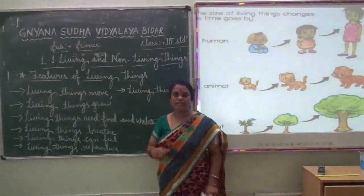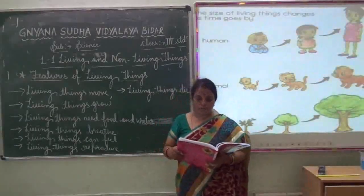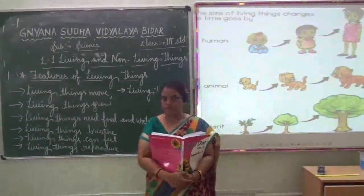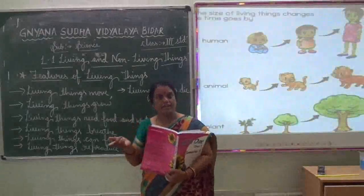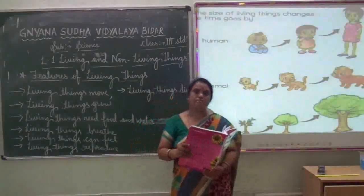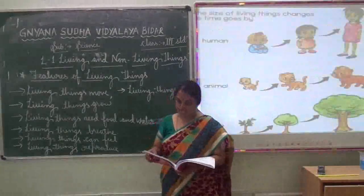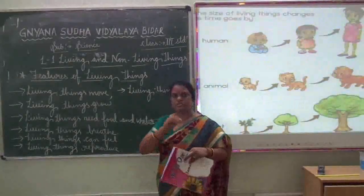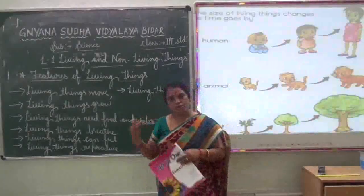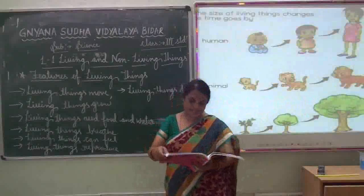We cannot live without food. Animals also cannot live without food. Animals cannot make their own food — directly or indirectly they depend on plants or other animals. For example, a cow eats grass. Some animals eat only plants, some animals eat flesh of other animals, and some animals eat both plants and animals. This detail you can learn in the next lesson.